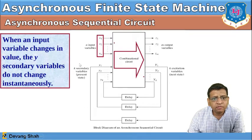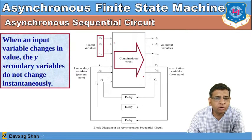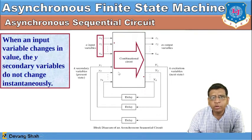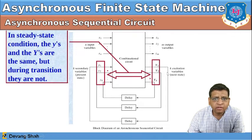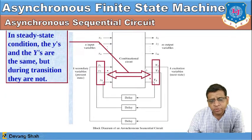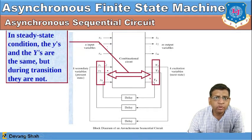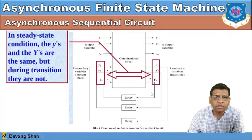When an input variable changes value, the secondary Y variables do not change instantly because the delay provides feedback from output to input. In steady state, the small y's and capital Y's are the same, but during transition they are not. For example, while 0 is feeding back, because of the delay it gets the previous state value of 1, generating a kind of delay — this is one of the biggest drawbacks of asynchronous sequential circuits.